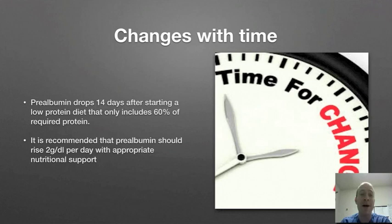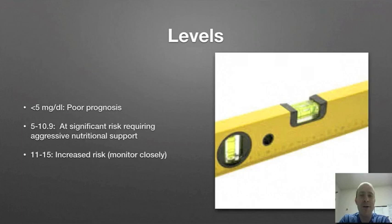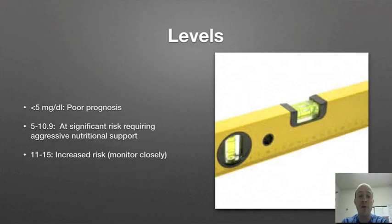So what are the levels that should concern us? A level less than 5 is associated with a poor prognosis. A level of 5 to 10.9 means those patients are at significant risk, requiring aggressive nutritional support. And 11 to 15 — those patients are at increased risk and need to still be monitored closely. As mentioned, some recommend it be followed twice weekly.